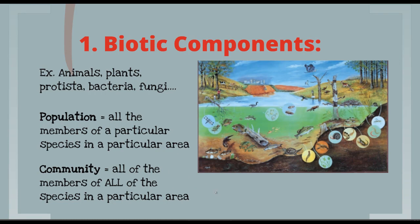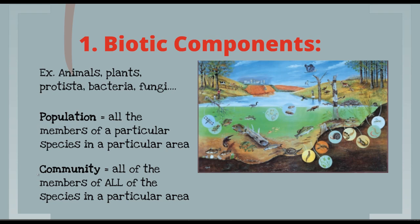Now there's a common mistake that students make. We use the word community — we say 'I live in the Natomas community' — but we're actually talking just about the people in Natomas, and that is technically a population. So the Natomas community biologically is all the people who live in Natomas, but also all the plants, animals, bacteria, and everything else living there as well. The biotic component of an ecosystem is the community, and that is made of all the individual populations.